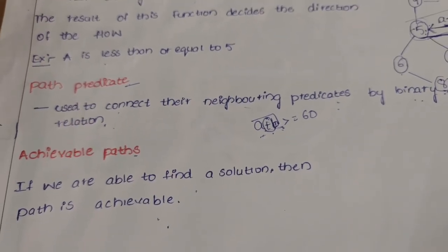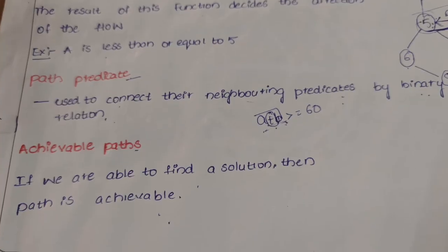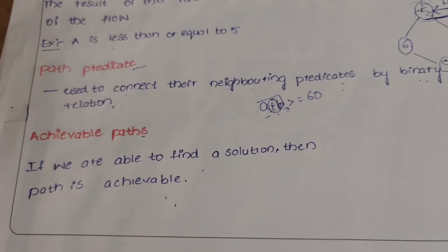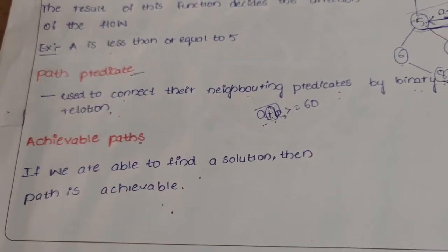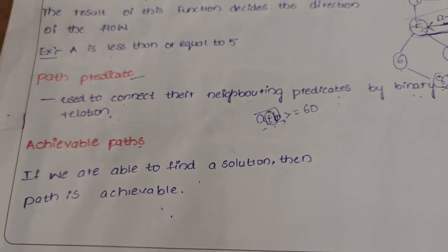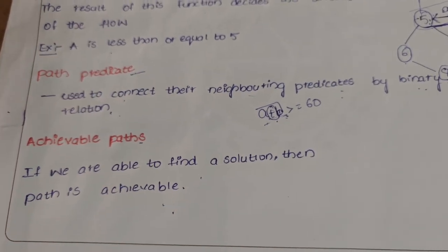Achievable paths are also considered to require that the path must be short and in a simpler form — not too long. If it meets these criteria, it is also known as an achievable path.